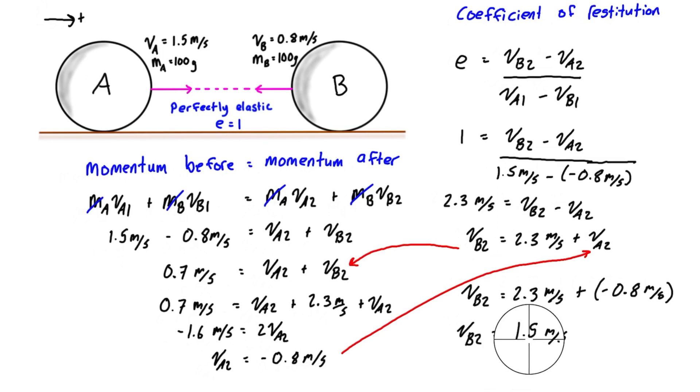And so just notice here we have 1.5 meters per second and negative 0.8. They just switched. So this velocity was transferred over to this mass and this velocity was transferred over to that mass. That only happens exactly like this if we have two masses of the exact same amount and the collision is perfectly elastic. So I did that on purpose just to show you it.